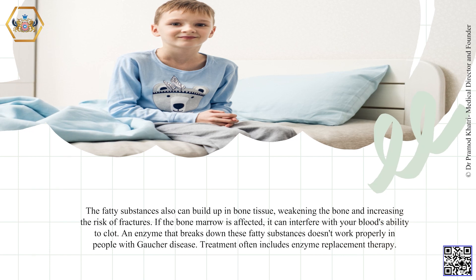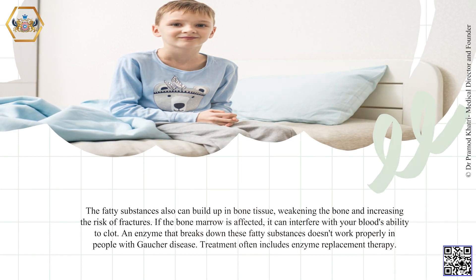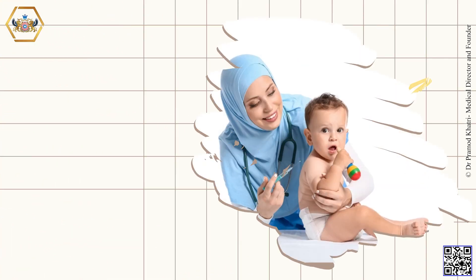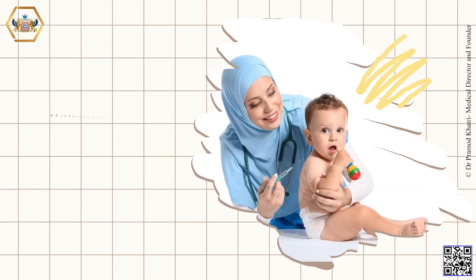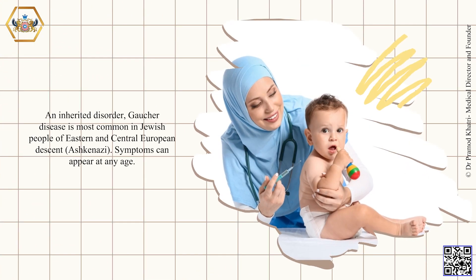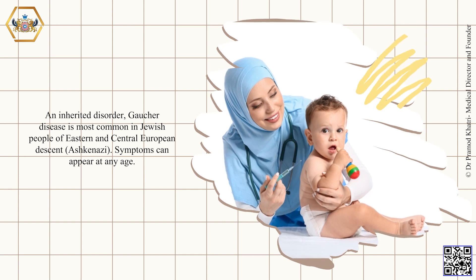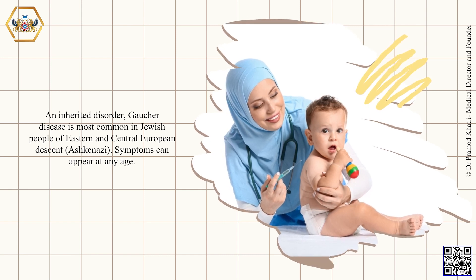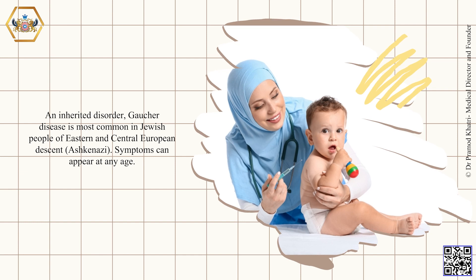Treatment often includes enzyme replacement therapy. An inherited disorder, Gaucher disease is most common in Jewish people of Eastern and Central European descent — Ashkenazi. Symptoms can appear at any age.